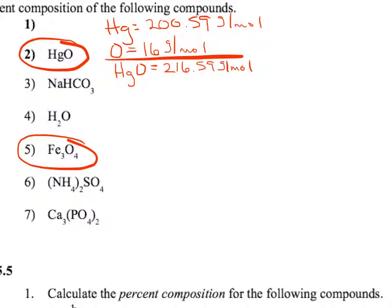Now to find the percent composition, to find the percent mercury and the percent oxygen, we need to divide the molar mass of each of the elements by the molar mass of the compound. So for mercury we'll take 200.59 divided by 216.59 and that will give us, we'll multiply that times 100 also to get the percent, and that will give us 92.6 percent mercury. Sorry I'm running out of room there just a little bit.